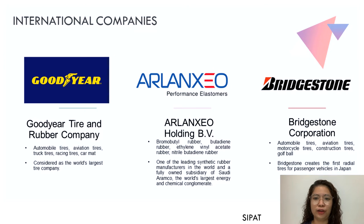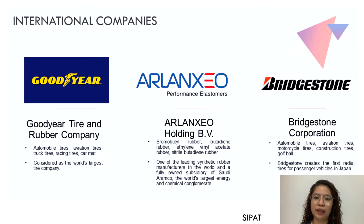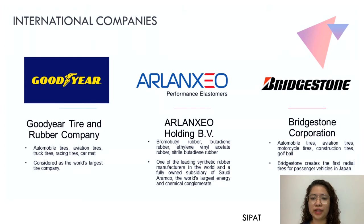Lastly for international companies, we have Bridgestone Corporation, founded in 1931 in the Japanese city of Kurume. Bridgestone created the first radial tires for passenger vehicles in Japan and was recognized as one of the world's top tire manufacturers in 2007. They manufacture tires for passenger cars, light trucks, buses, aircraft, construction, and off-road mining vehicles, as well as industrial and agricultural machinery and motorcycles. They also manufacture automotive parts, maintenance and repair services, and raw materials for tires and other products.